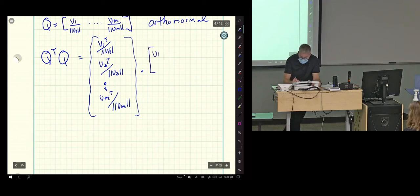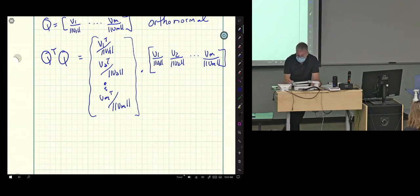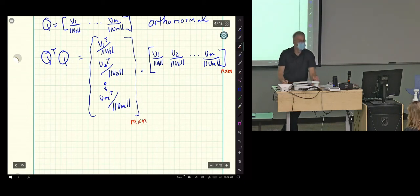And then we've got V1 over norm of V1, V2 over norm of V2, dot dot dot. Q, it's still N by M. The transpose, that's M by N. So that's why the identity is going to pop out.